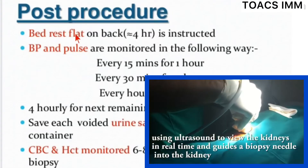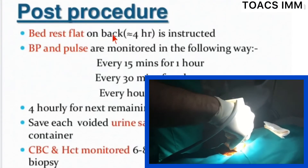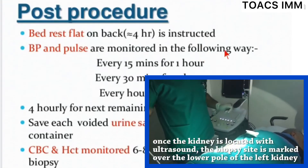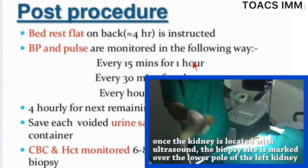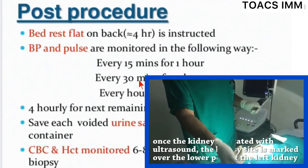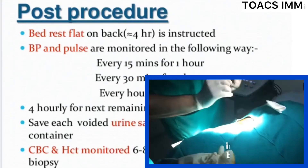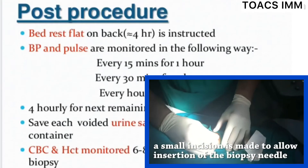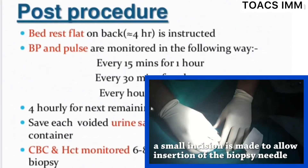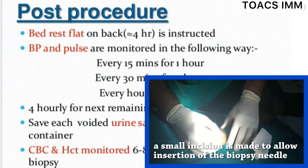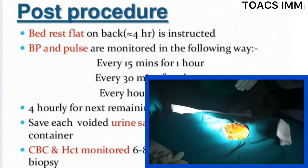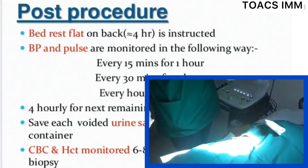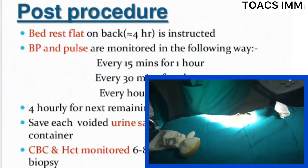Post procedure: bed rest flat on the back for 4 hours is instructed. Blood pressure and pulse are monitored every 15 minutes for 1 hour, then every 30 minutes for 1 hour, then every hour for 4 hours, or for the remaining 24 hours. Urine samples are collected in a clear specimen container. Full blood count and hematocrit are monitored at 6 to 8 hours and 18 to 24 hours after biopsy.